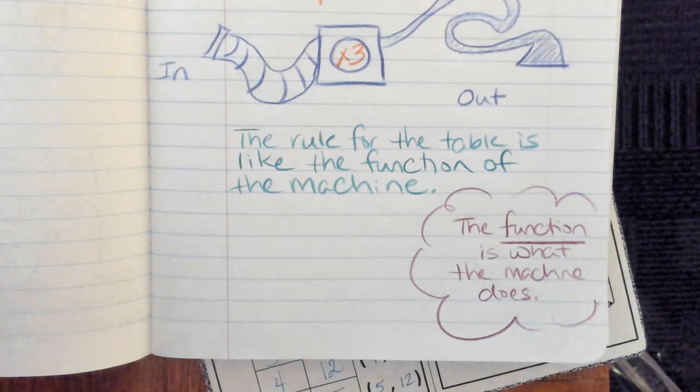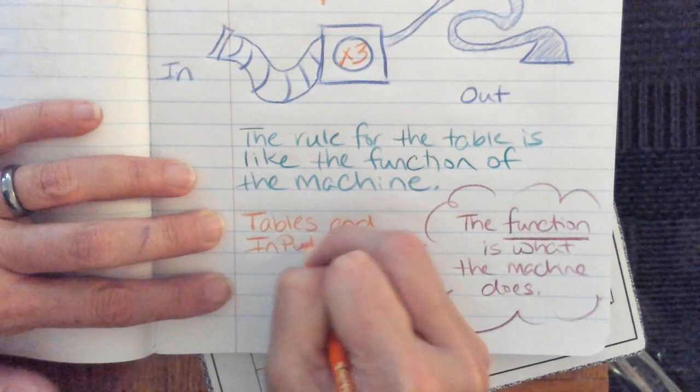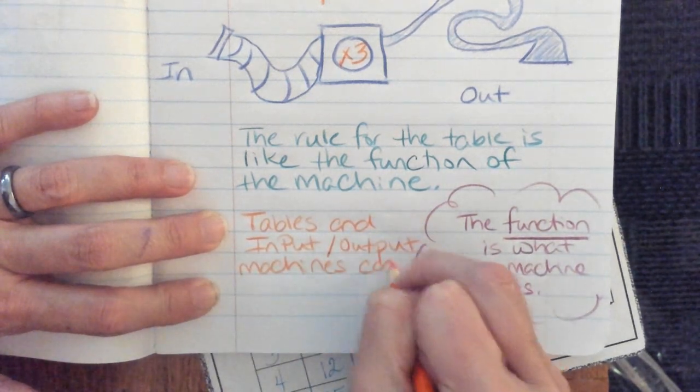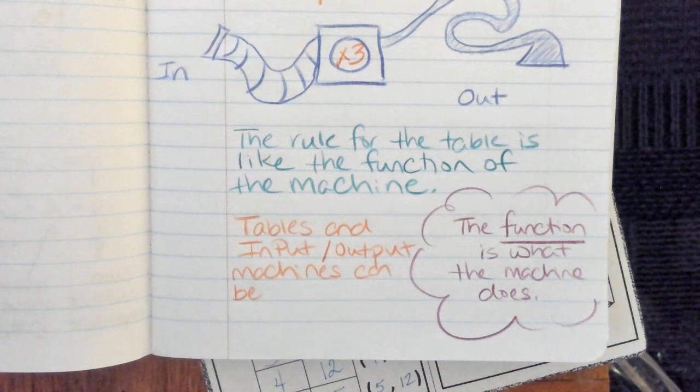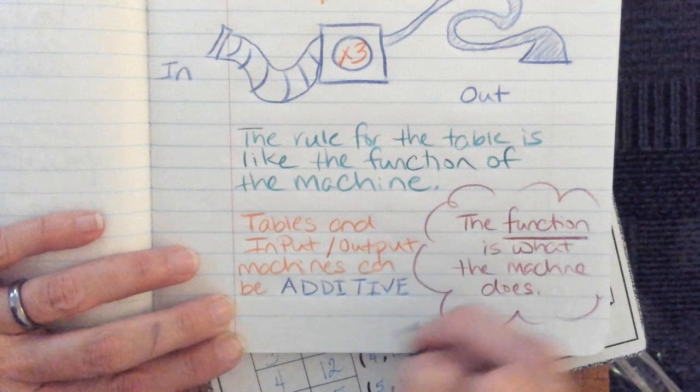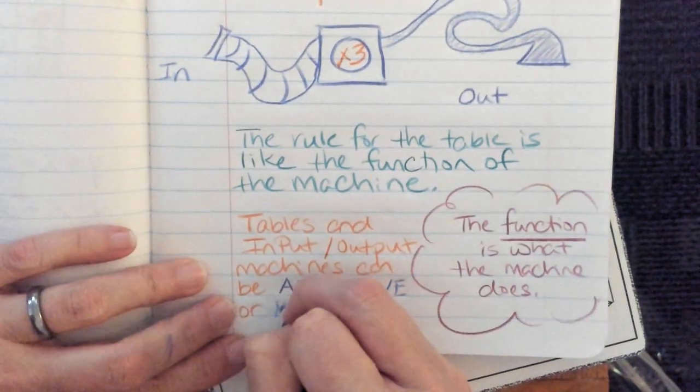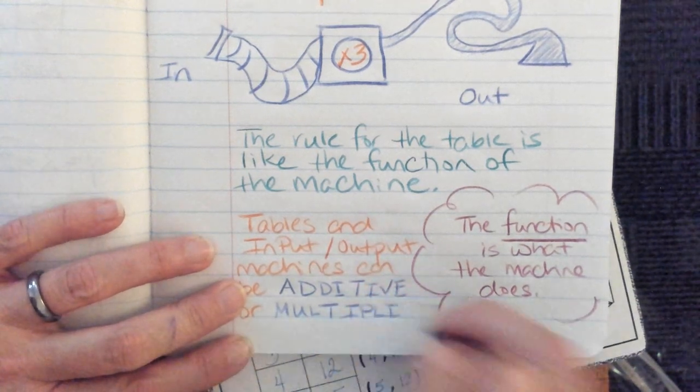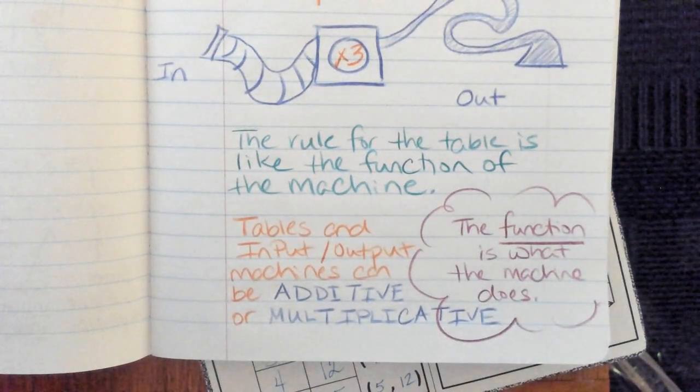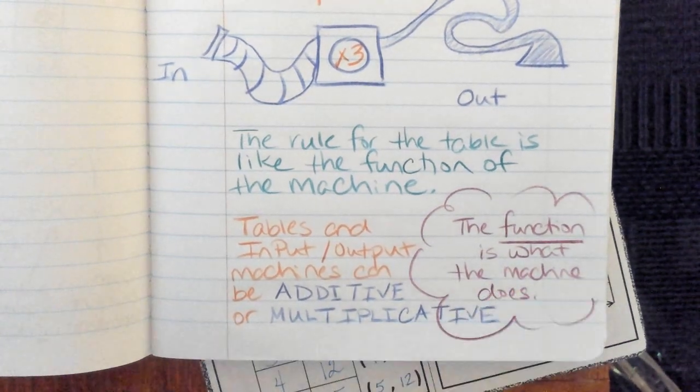The other thing to know is that tables and input-output machines can be, and there's two different types, for the most part, they can be additive, which means adding, or multiplicative. I think I'm going to go over my words over here. So they either add or they multiply. And, like, I mean, like add or subtract or multiply or divide, but in general, we describe them as being either additive or multiplicative.